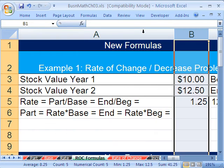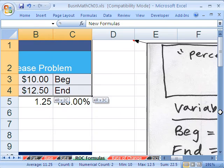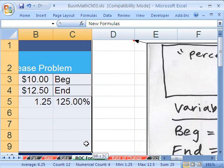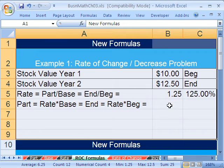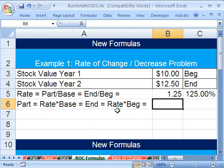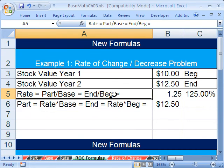Notice we've just substituted our new words in for Part, which is End, and Base, which is Begin. I'm going to type in equal. I'm going to come up here and do that again. Equals the Rate times whatever our Begin is. Really what this means is we have 1 times 10 plus 25% extra of this 10, which gives us what? 12.50. So this is kind of formula number one. This is just how we can use that.